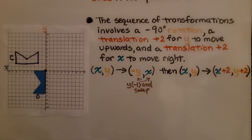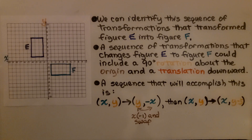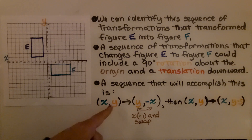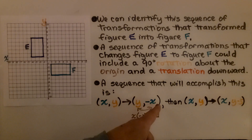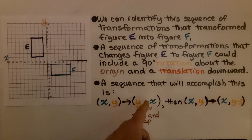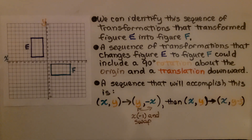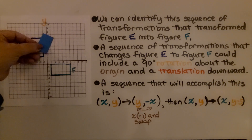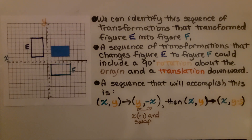We can identify the sequence of transformations that transformed figure E into figure F. The sequence could include a 90 degree rotation about the origin and a translation downward. The xy coordinates map to y, negative x — to rotate 90 degrees, we multiply x by negative 1 and then swap them, giving us y then negative x. Then we translate: xy coordinates map to x, y minus 5. So we rotated around the origin as the center of rotation 90 degrees, then translated it down so it was in place at F.